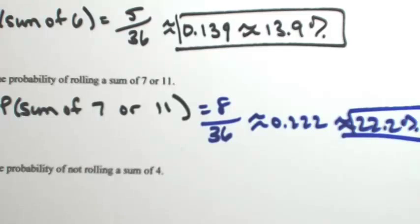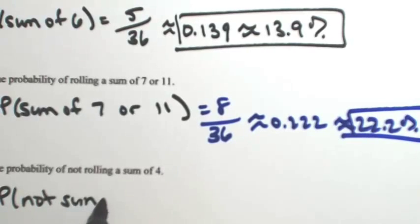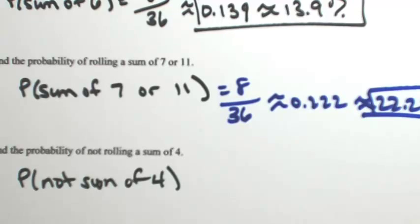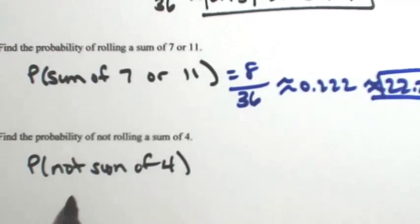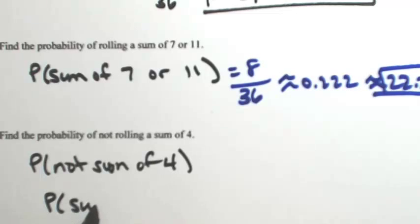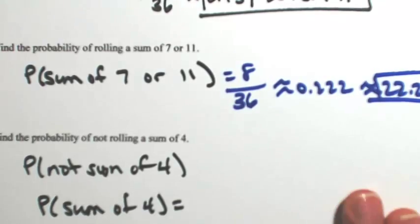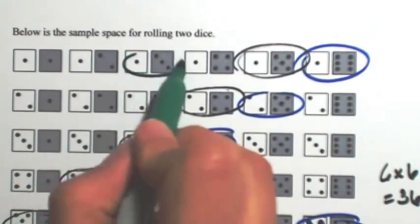And then this third example we have is find the probability of not rolling a sum of four. So the probability of not a sum of four. That's a lot of possibilities. So I think it might be easier if we actually find the probability of getting a sum of four. I think that would be easier.